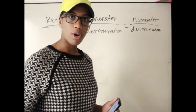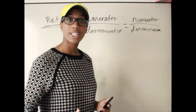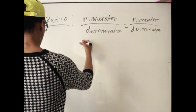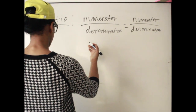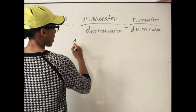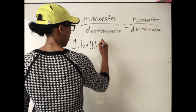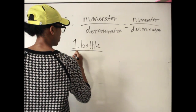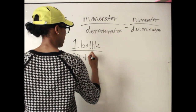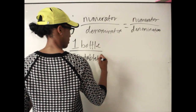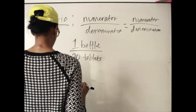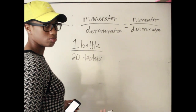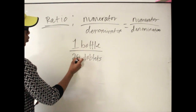Here's an example to help understand this. Let's say we have one bottle, and in one bottle you have 20 tablets. So we have a 1 to 20 ratio.